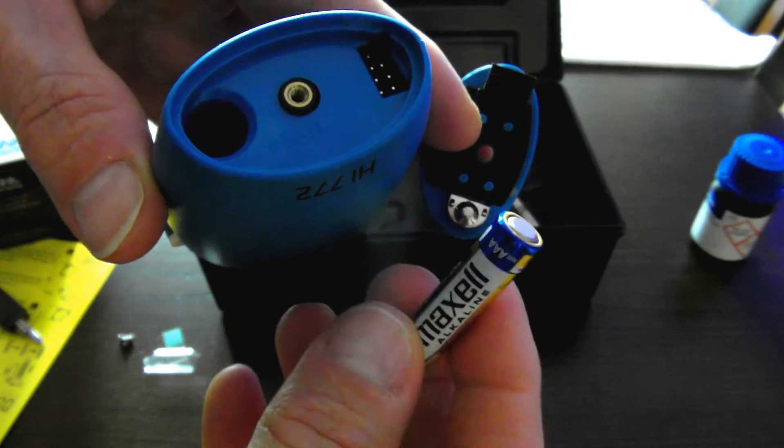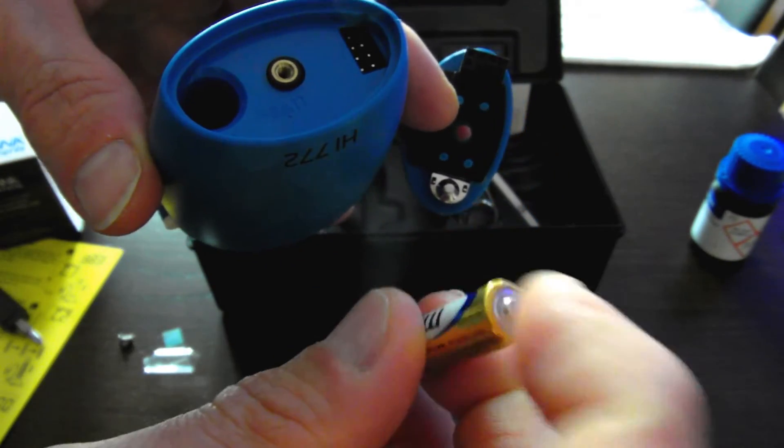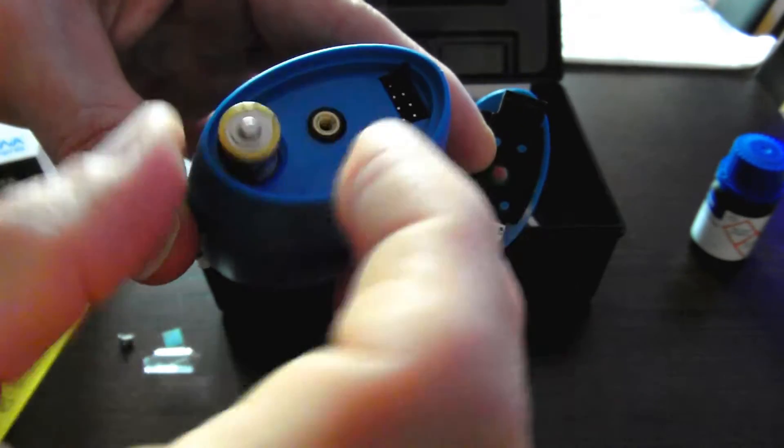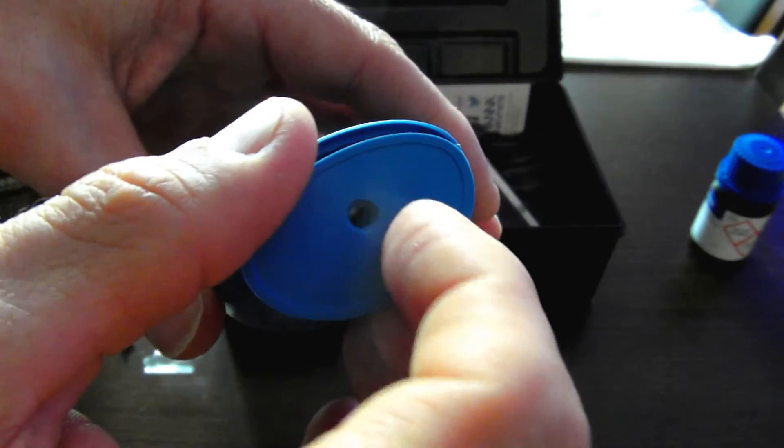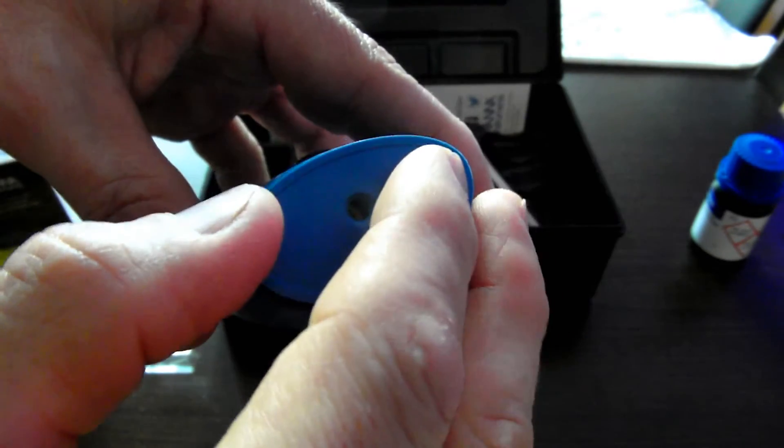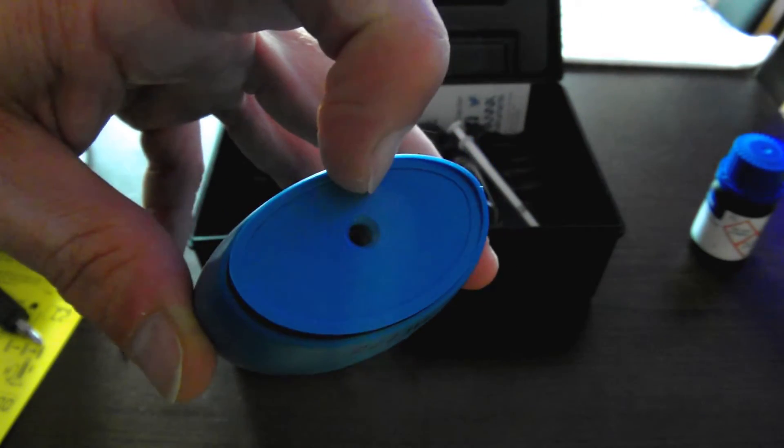Now, with the supplied triple A battery, there's a little symbol here for positive, so the positive terminal with a little nub facing outward. And then I'm going to reseat the base carefully and screw it in with the Phillips screw.